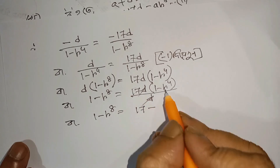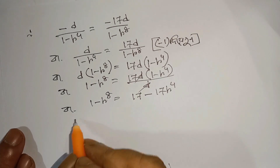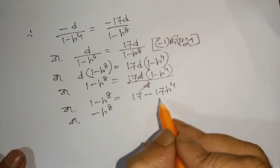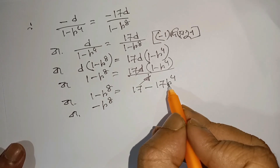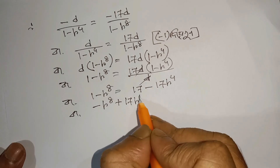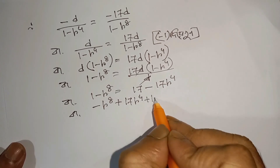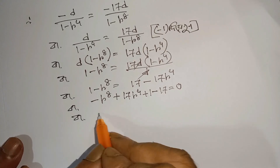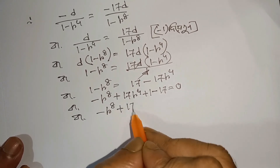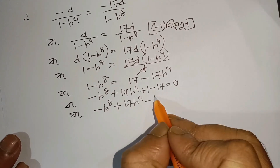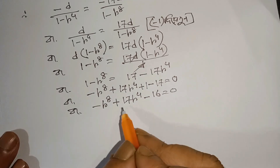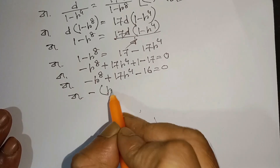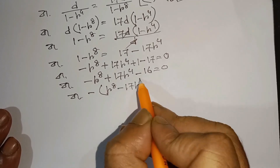Multiplying through, we get minus r to the power 8 plus r to the power 4. This simplifies so that the expression becomes minus r to the power 8 plus 1 times r to the power 4, and this gives minus 6.